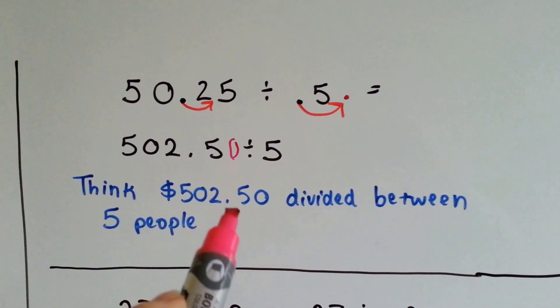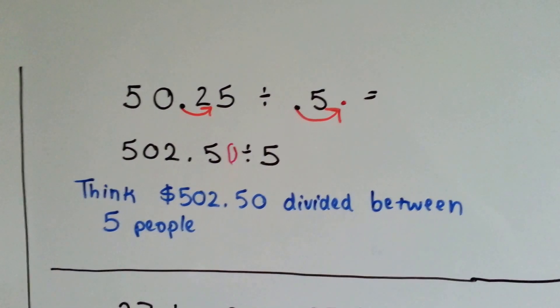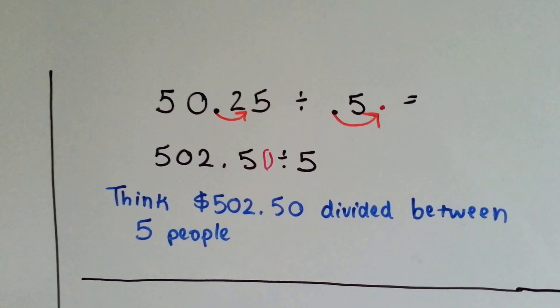If you had $502.50 divided between five people, that's a lot easier to figure out than just thinking decimals.